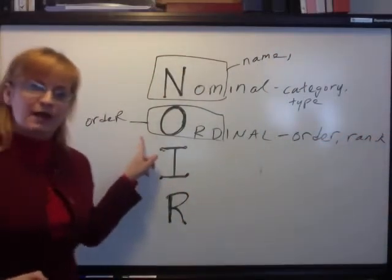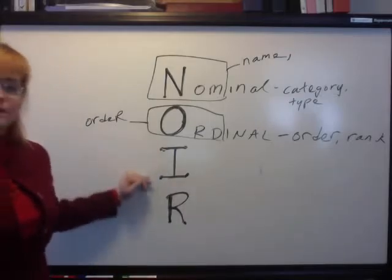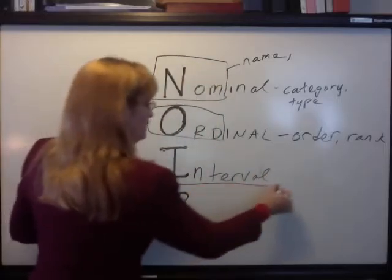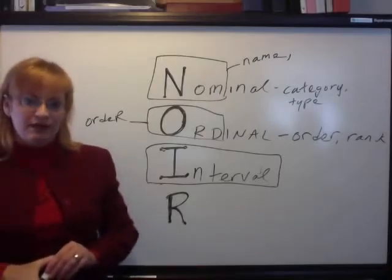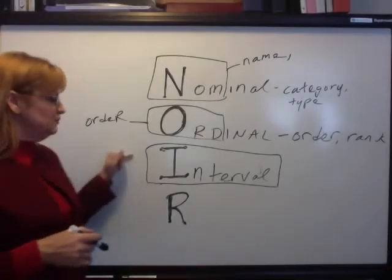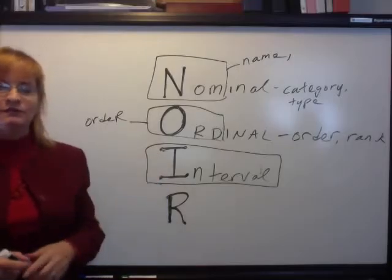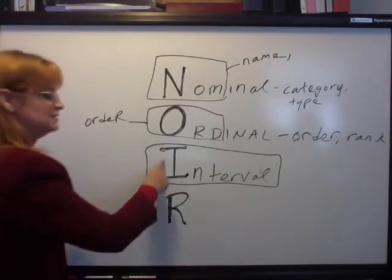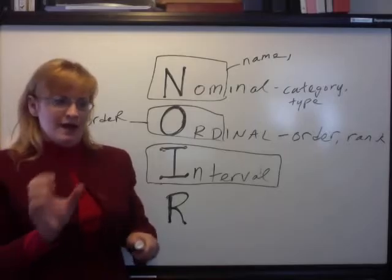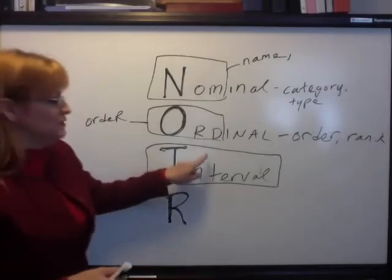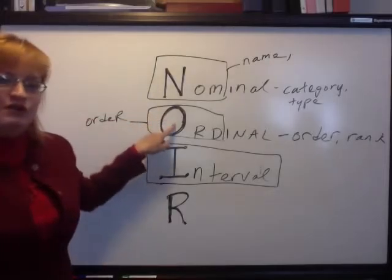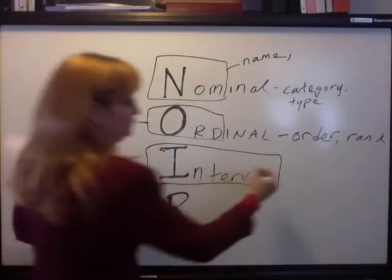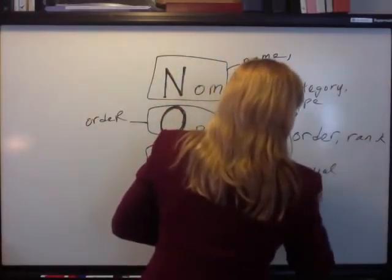But the intervals in between may not be equal. The next measurement scale is interval. An interval scale has equal intervals in between different items. So on an interval scale, a two is twice as much as a one, a ten is twice as much as a five, a three is three times as much as a one. The distances in between items are meaningful and equal. So with an interval scale, you're not only naming and giving order to your data — you know what's higher than what — you also know how far apart things are from each other. It's equal distances between scores.